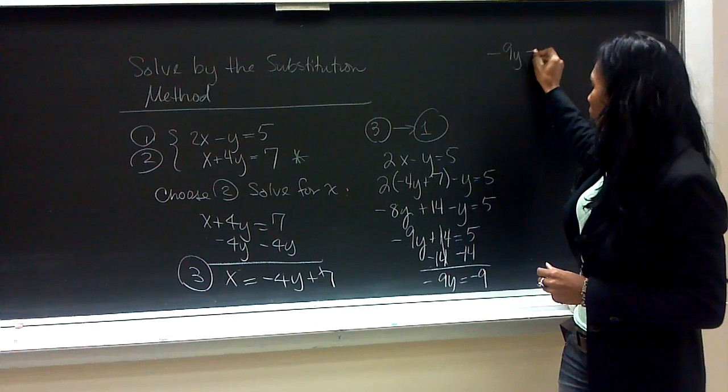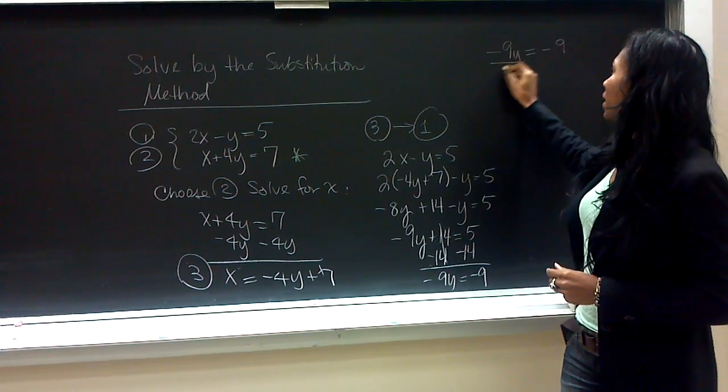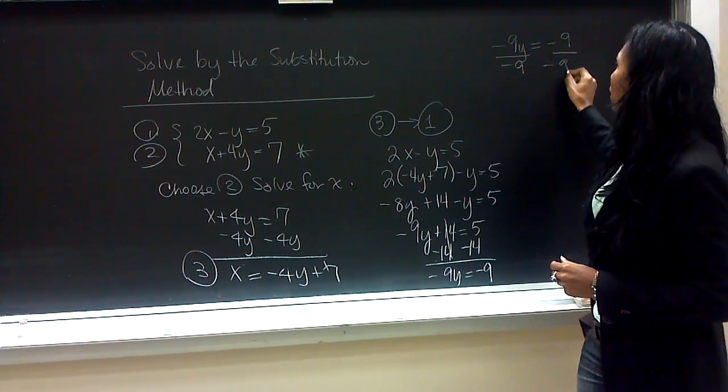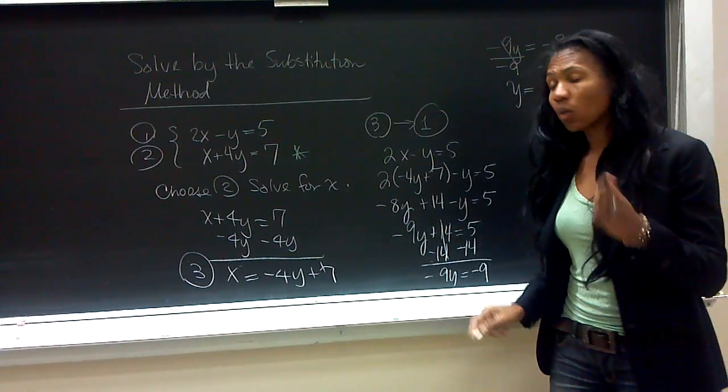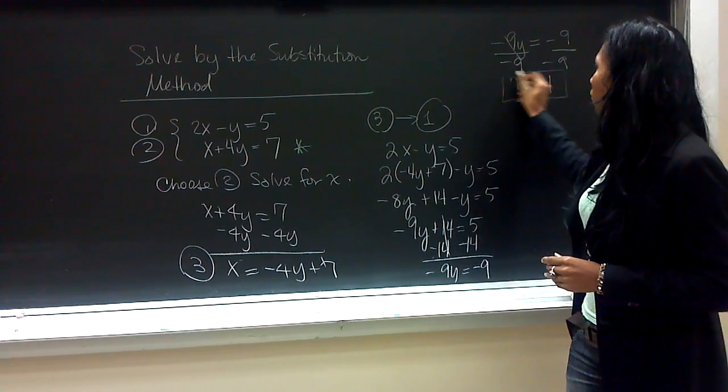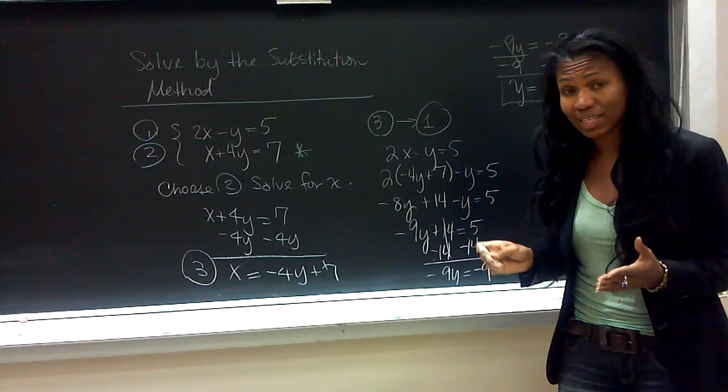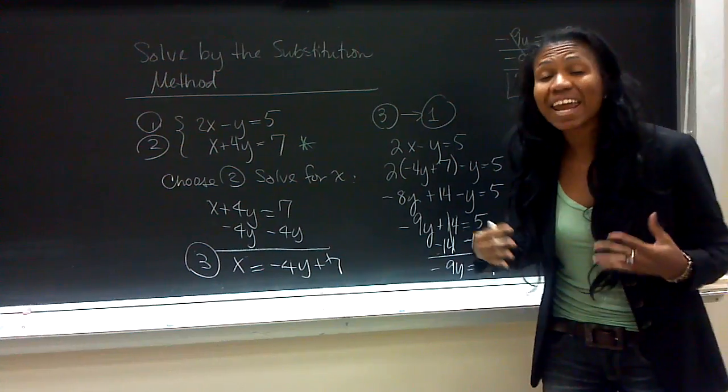We now solve for y by dividing both sides by negative 9. And y is equal to 1. Now, we're not done. The system of equations requires two results. It requires an x and it requires a y.